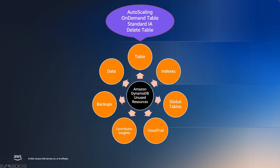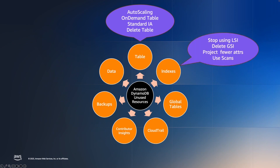That was about the unused table. The second one is unused indexes. To identify unused indexes, you can again use the same consumed capacity units. When looking into CloudWatch, make sure to provide the index name along with the table name in that particular filter. This can be either a local secondary index (LSI) or a global secondary index (GSI). If you identify any LSI that is unused, you can delete it, as it gets created and deleted with the main table. Alternatively, you can simply avoid writing any items to that LSI by not populating the sort key attribute of that LSI.